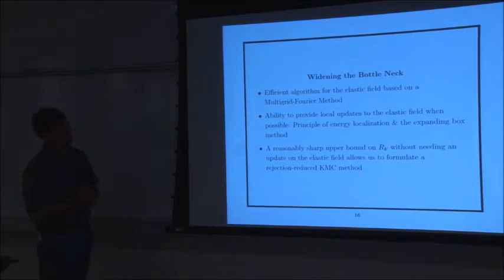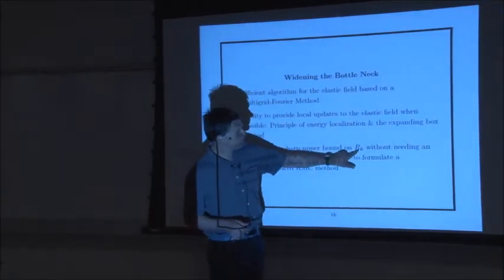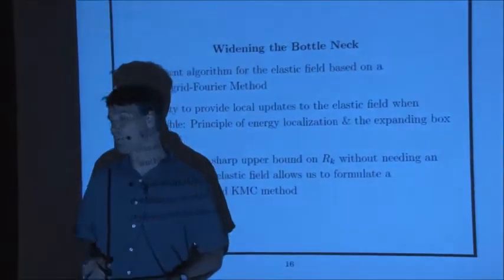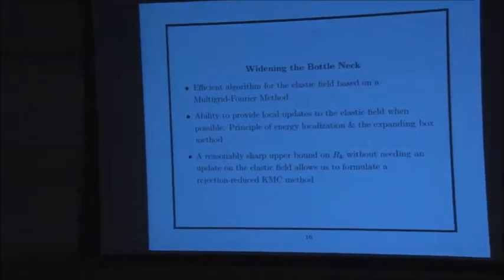The third ingredient was finding a rather simple way to get an estimate and an upper bound on the rates. It's expensive to compute rates, but it turns out fairly cheap to get an upper bound. Once you have an upper bound, you can use that as an estimate. You fill your rate tables with upper bounds on the rates rather than the rates themselves. Since they're upper bounds, you don't worry about not picking the right thing; you just have to worry about picking it and potentially having to reject it.